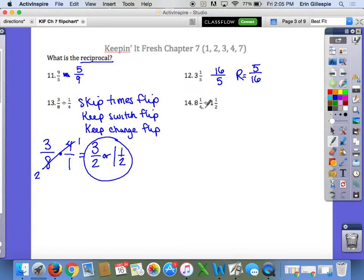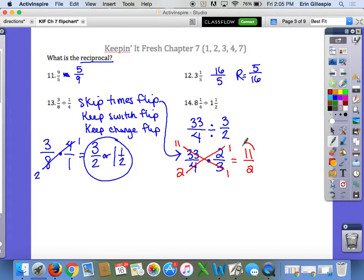Over here, with mixed numbers and division, take an extra step to change those mixed numbers to improper fractions, then do skip times flip. I'll change these to improper: 8 times 4 is 32, plus 1 is 33. I still write division because I'm not doing skip times flip yet. 1 times 2 is 2, plus 1 is 3. Now I do this step: 33 over 4 stays 33 over 4 (skip), times (flip) 2 over 3. I can cross-reduce: divide both by 2 to get 1 and 2, divide by 3 to get 1 and 11. So I get 11 halves, or 5 and 1 half.